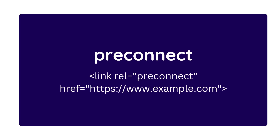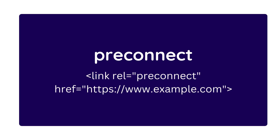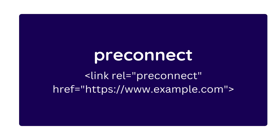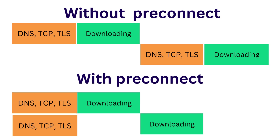Next is pre-connect. Pre-connect allows the browser to set up early connections before HTTP requests are sent to the server. These connections include DNS lookup, TCP handshake, and TLS negotiations. We can actually speed up the loading time by 100 to 500 milliseconds by establishing early connections to third-party origins.